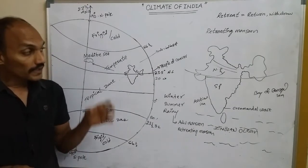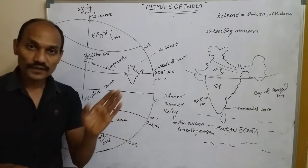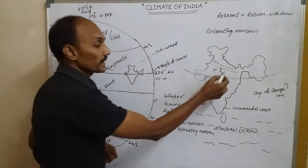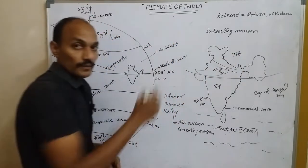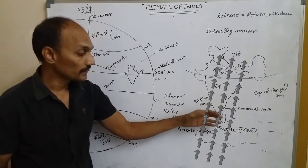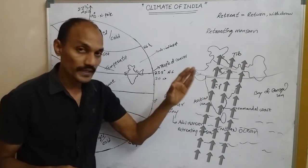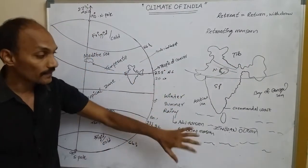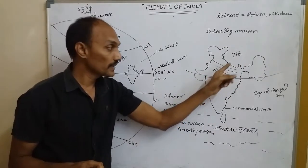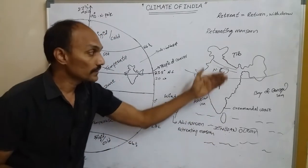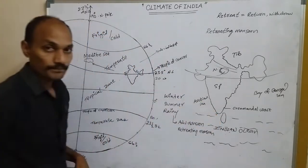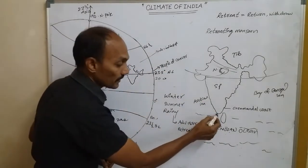At the end of summer, low pressure conditions occur over central India and the Tibetan Plateau. High pressure winds from the Indian Ocean start to travel toward these low pressure areas — winds generally travel from high pressure to low pressure. The southwest monsoon winds first touch Kanyakumari.